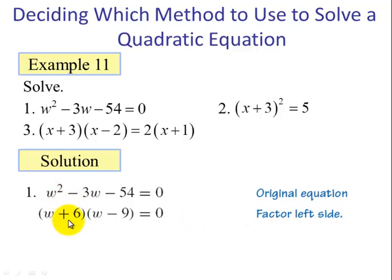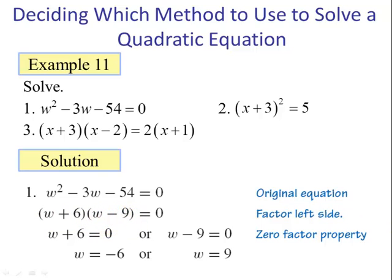If we take 6 times -9, we get -54. And 6 plus -9 is -3. Now using the zero factor property, we set each binomial equal to 0, and we have the solutions w = -6 and w = 9.